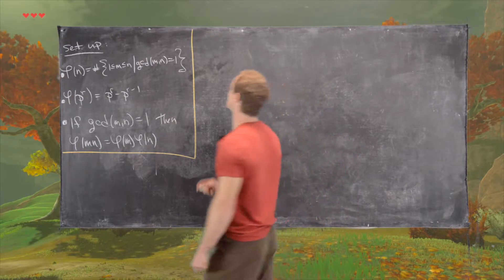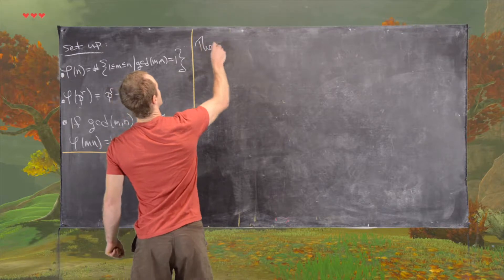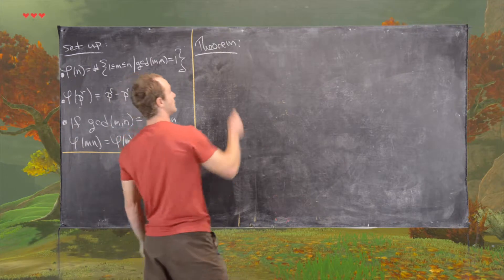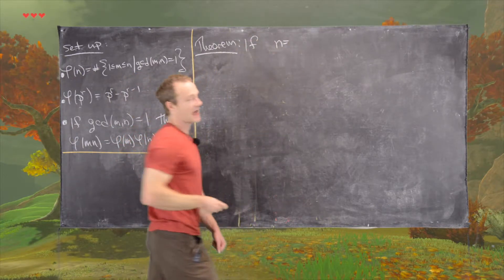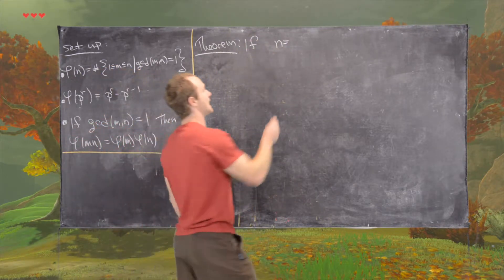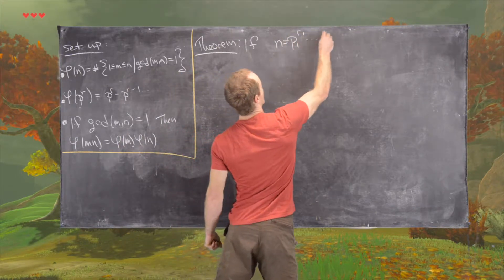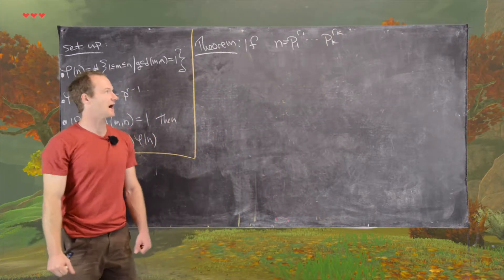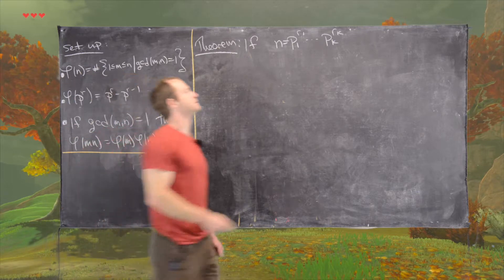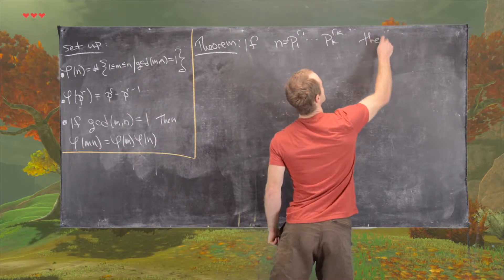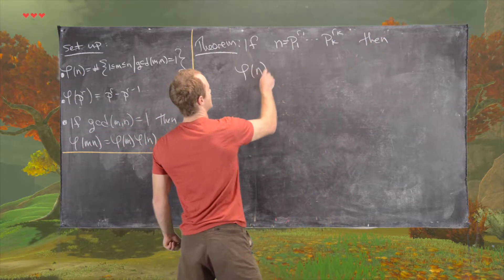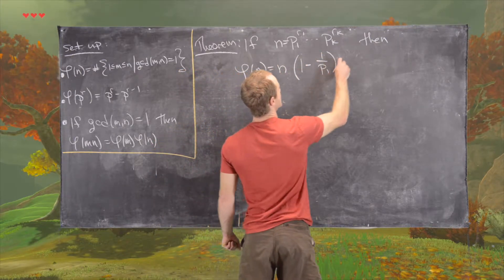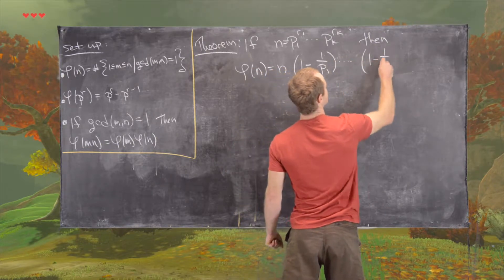So that brings us to the following theorem, which will give us a formula for Euler's phi function. If n has a prime factorization p1 to the r1 all the way up to pk to the rk, where all of the pi's are distinct primes, then phi of n equals n times 1 minus 1 over p1 times all the way up to 1 minus 1 over pk.